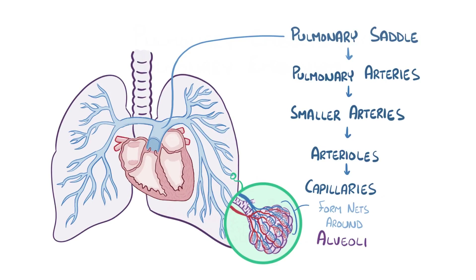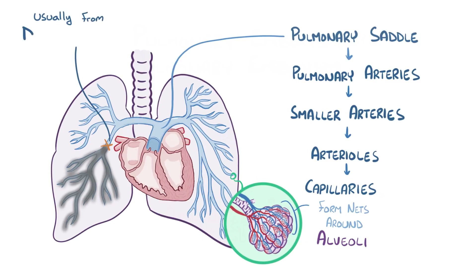When a pulmonary embolism happens, a blockage in any of these arteries leads to a decrease in blood flow to lung tissue downstream. The majority of the time this blockage is caused by a broken-off piece of a blood clot commonly associated with deep vein thrombosis.